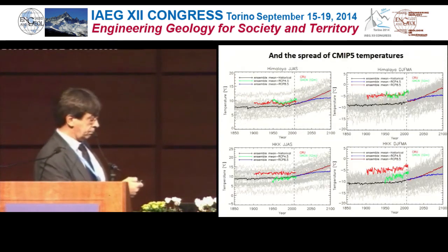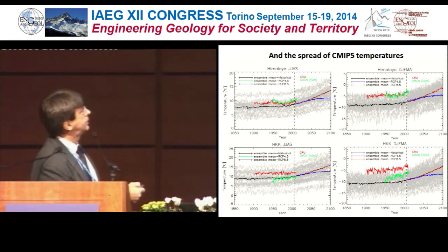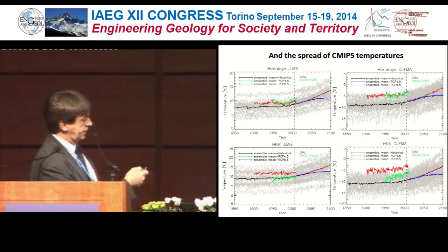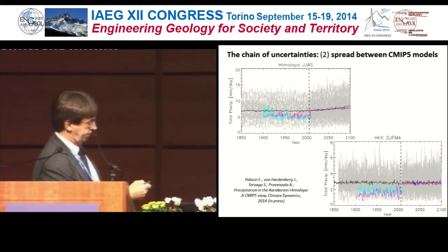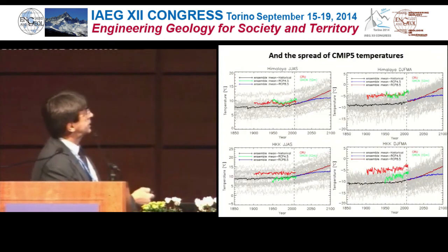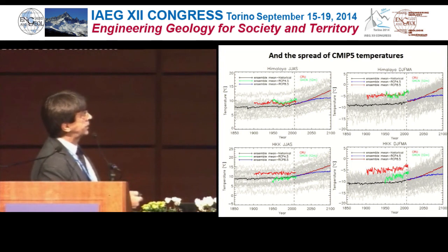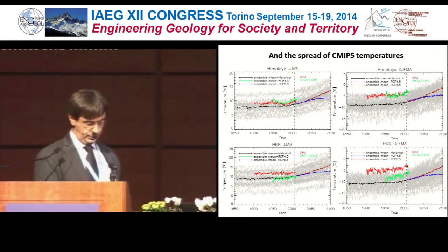For temperature there is a similar problem. Looking at the spread in temperature for summer in the Himalaya and winter in the Karakoram — the two most important rainfall seasons — even the model average does not correspond to observations; there is a systematic cold bias where models are colder than reality. So you have this kind of uncertainty from the climate models themselves.